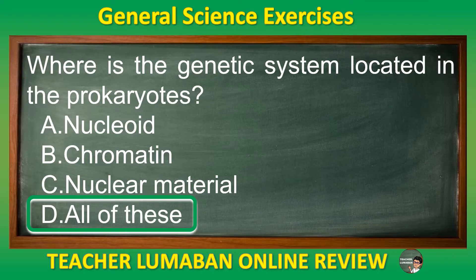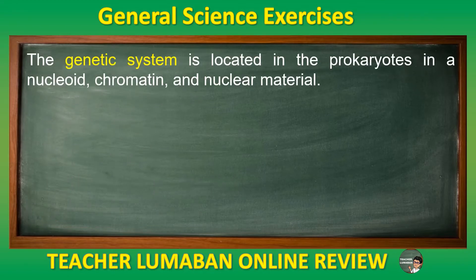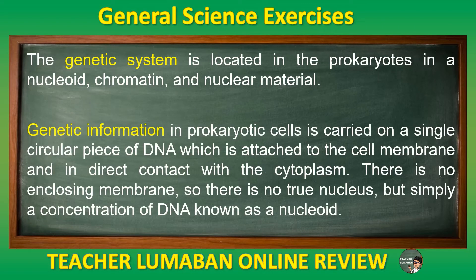The genetic system is located in prokaryotes in a nucleoid, chromatin, and nuclear material. Genetic information in prokaryotic cells is carried on a single circular piece of DNA which is attached to the cell membrane and in direct contact with the cytoplasm. There is no enclosing membrane, so there is no true nucleus, but simply a concentration of DNA known as a nucleoid.